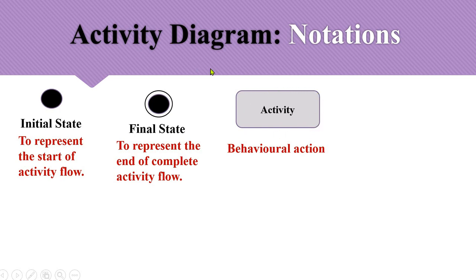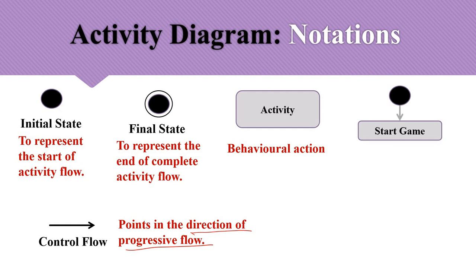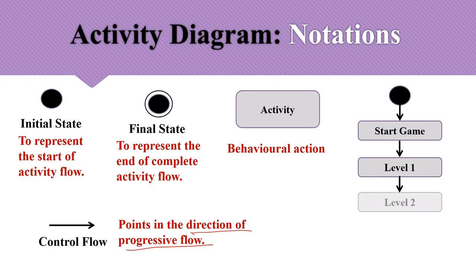Activities are represented by rounded rectangular boxes in an activity diagram. To represent the flow from one activity to another, we use headed arrows showing the control flow in the direction of progressive flow. Let's take a simple example of a game: starting from the initial state, we move to Level 1, then to Level 2, and finally to the end — a simple activity diagram without swim lanes, fork, or join nodes.